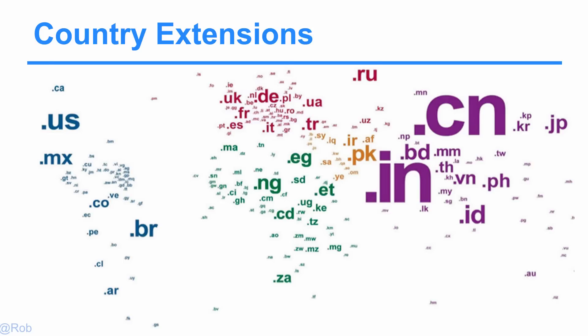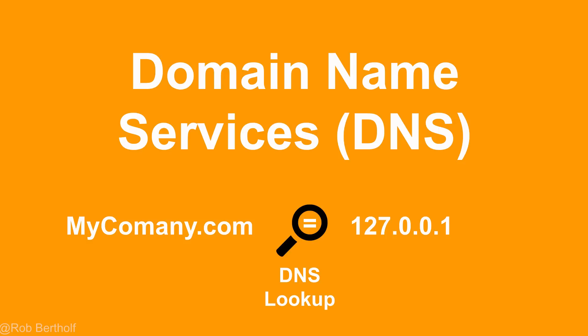In addition to those, there are also country extensions — every country has its own. We are .us, .ca is Canada, et cetera. So a domain name is really equal to an IP address in its simplest form. How does a domain name know which IP address to route to? That's called domain name services, or DNS.